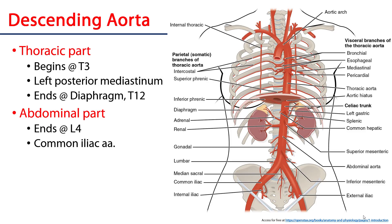The thoracic aorta consists of three parts: the ascending aorta, the arch of aorta, and the thoracic part of the descending aorta, which runs between the T3 level to the aortic hiatus at approximately the T12 level.